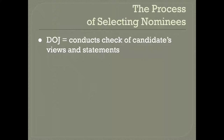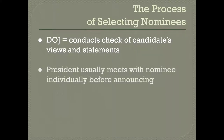The last thing a president wants is their nomination to be rejected, which happens about 20 percent of the time in American history — about one out of every five nominations has had to be withdrawn or has been rejected outright. Before the president actually makes the nomination, they usually meet with the nominee. In the vast majority of cases, the president does not know the nominees personally, so they usually meet with them before announcing.